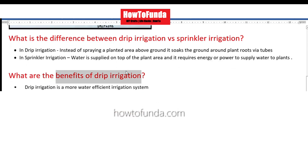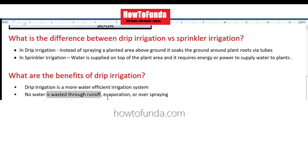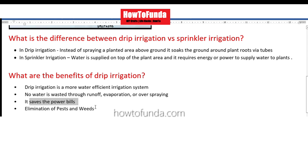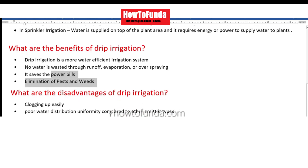Now we'll understand the benefits of drip irrigation. By using drip irrigation you can save a lot of water — that is the first advantage — because no water is wasted while running through the land, it saves from evaporation, and only the water required for a given plant gets used. We will also save on power bills using drip irrigation, and it also eliminates pests and weeds.